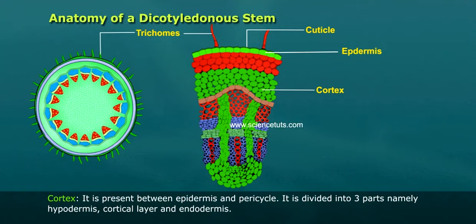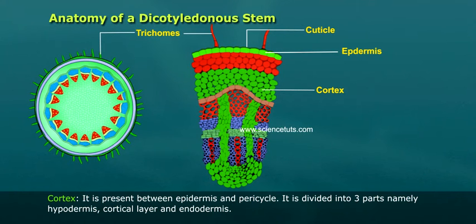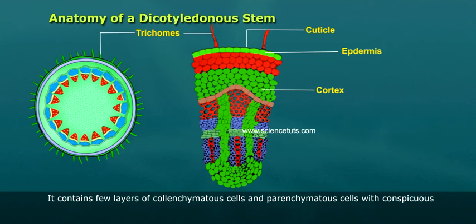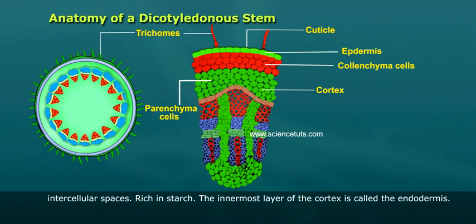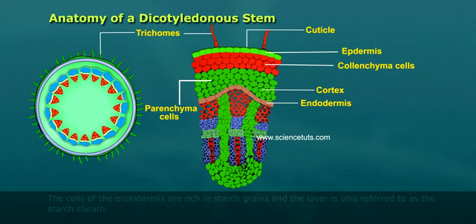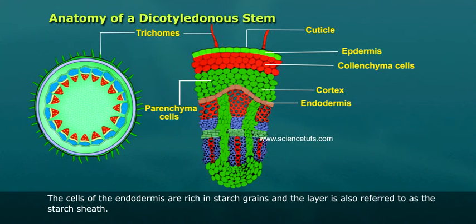Cortex is present between epidermis and pericycle. It is divided into three parts, namely hypodermis, cortical layer, and endodermis. It contains few layers of calenchymeter cells and parenchymeter cells with conspicuous intercellular spaces. The innermost layer of the cortex is called the endodermis. The cells of the endodermis are rich in starch grains and the layer is also referred to as a starch sheath.